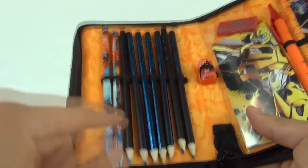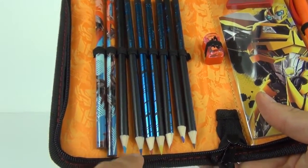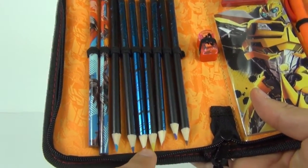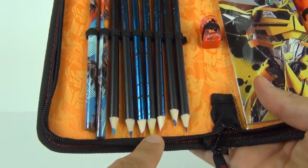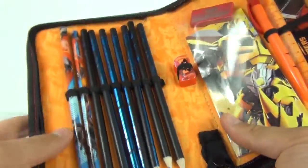We do get six of the crayons as well. We get blue, light blue, dark blue, red, we get yellow, we get orange, purple, and what looks like brown there as well.